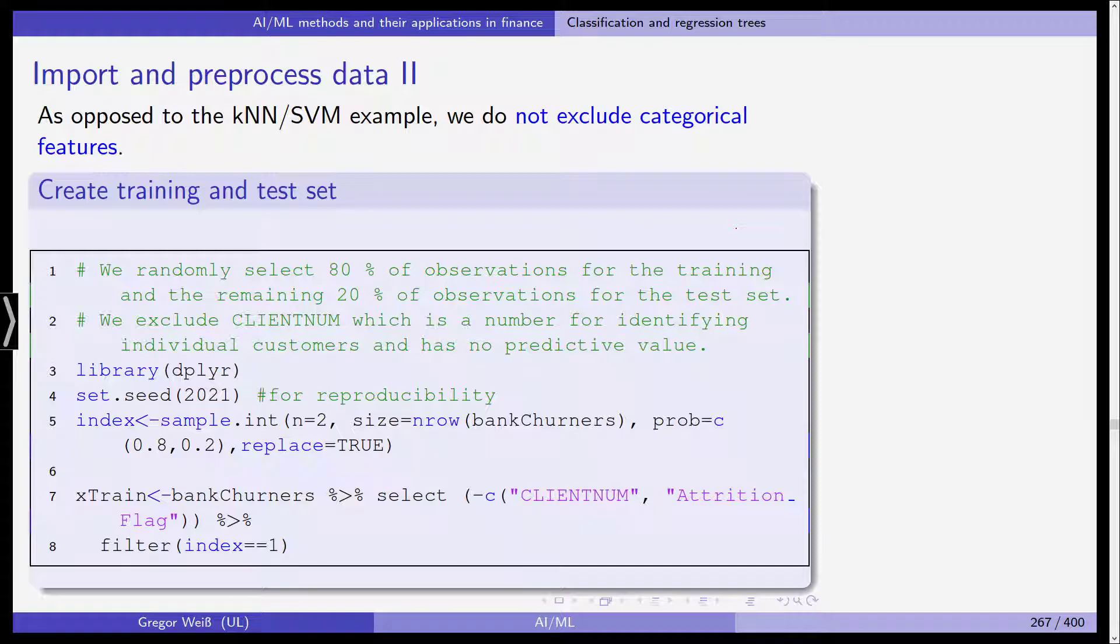We exclude the client number, which is a number for identifying individual customers. It has no predictive value because it doesn't carry any economic information. We use the dplyr library. We use the set seed command in order to be able to replicate the results. Then we set the training set and the test set. We sample integers, include our 80% and 20%, and then we select based on the client number.